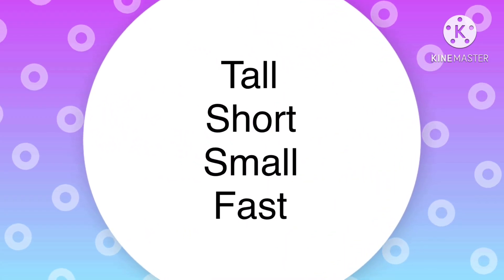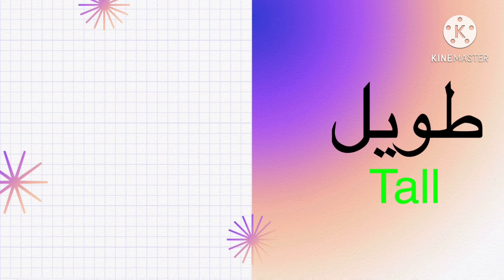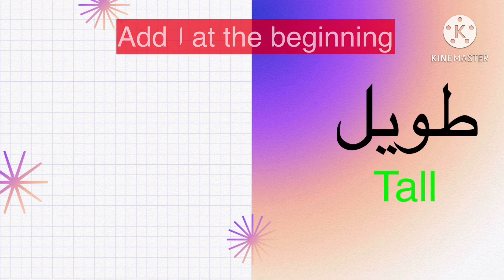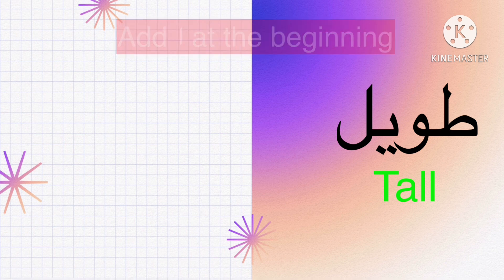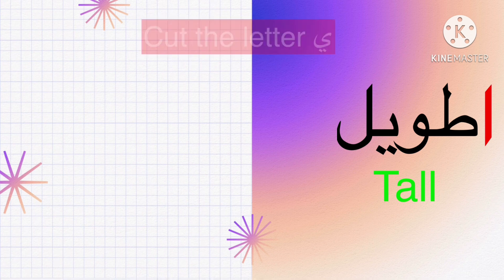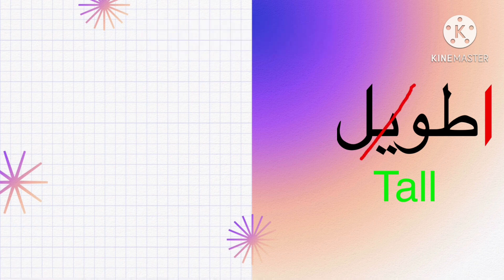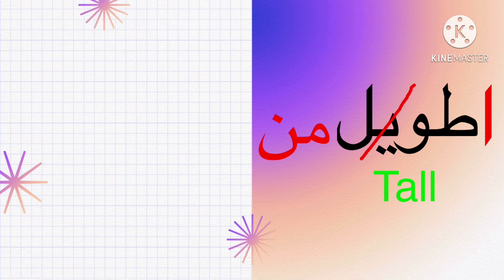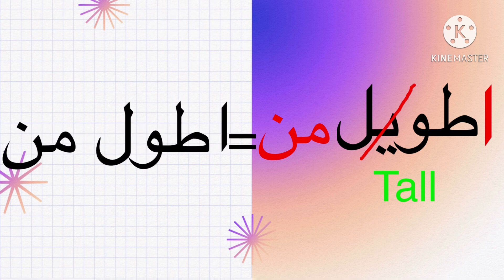The other words we'll cover are tall, short, small, and fast. Let's take 'towheel', which means tall. Step one: add alif at the beginning — we get 'akbir'. Step two: cut the letter ya — we get 'up well'. Step three: add the preposition 'min' — we get 'akibar min', which means taller than.